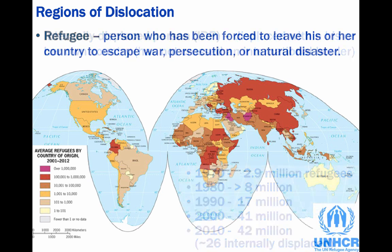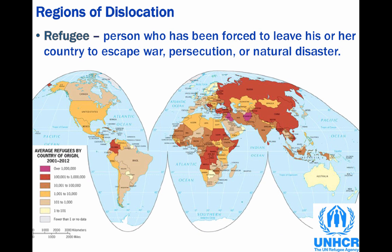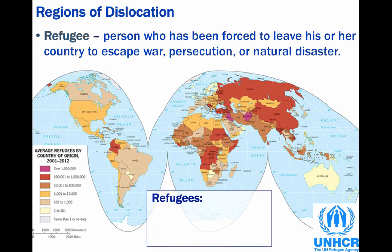The UNHCR helps return refugees to their homelands, a process called repatriation. Refugees can often be identified by at least three characteristics. Most refugees move without any more tangible property than what they can carry or transport with them. Most refugees also make their first step on foot, by bicycle, wagon, or open boat — in other words, the technology that facilitates modern migration is inoperative.